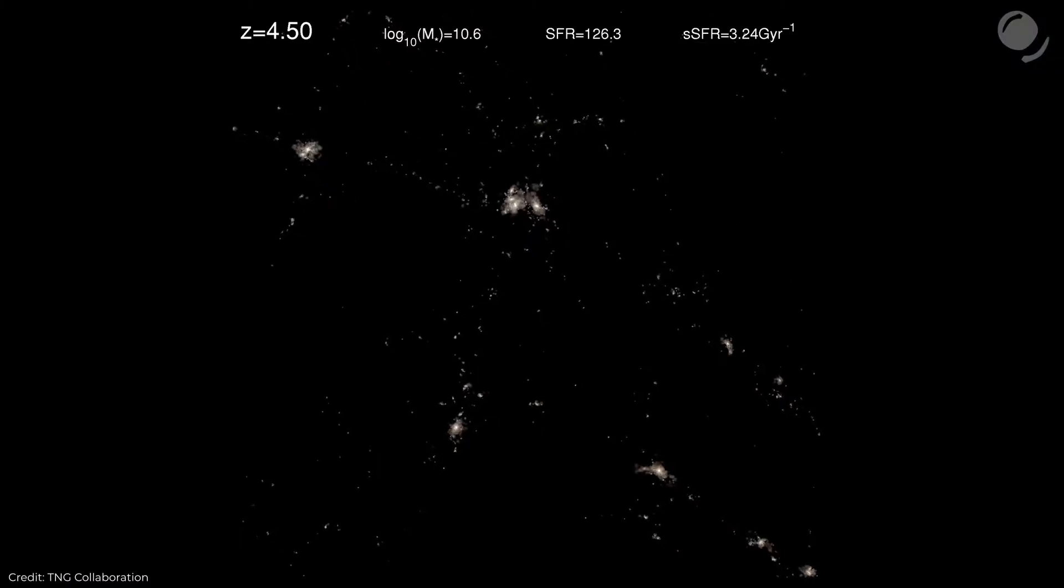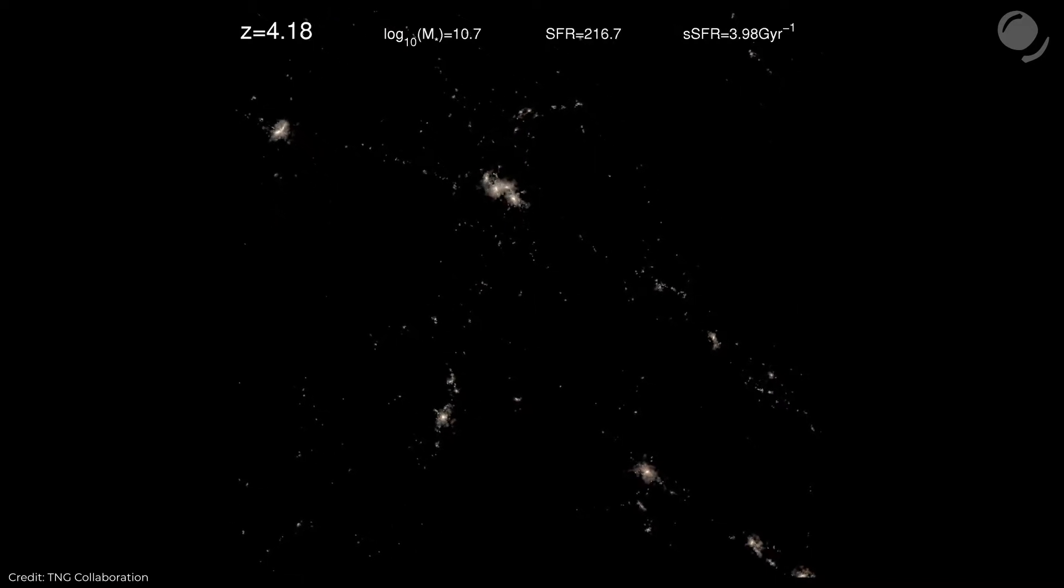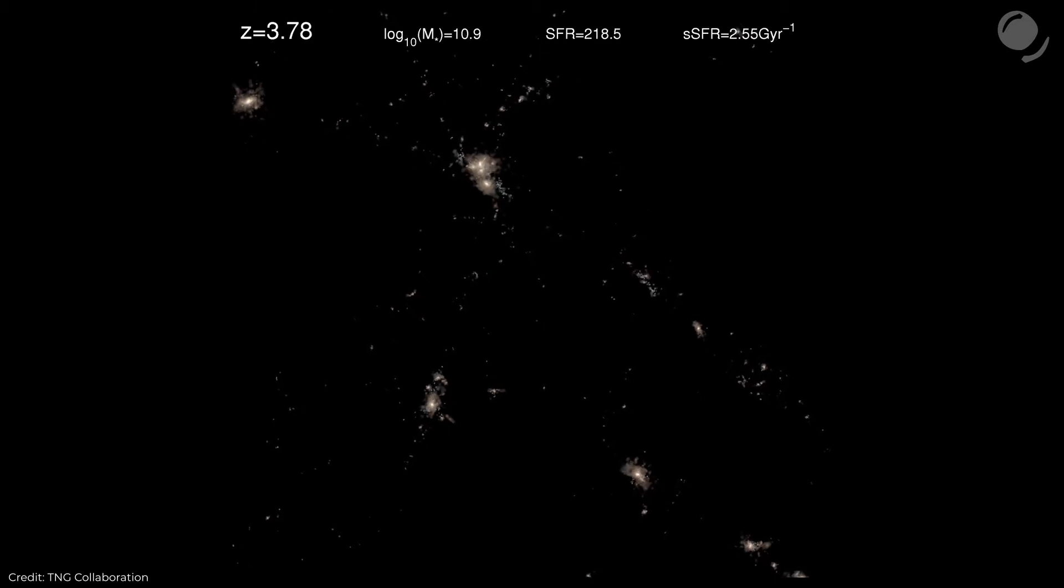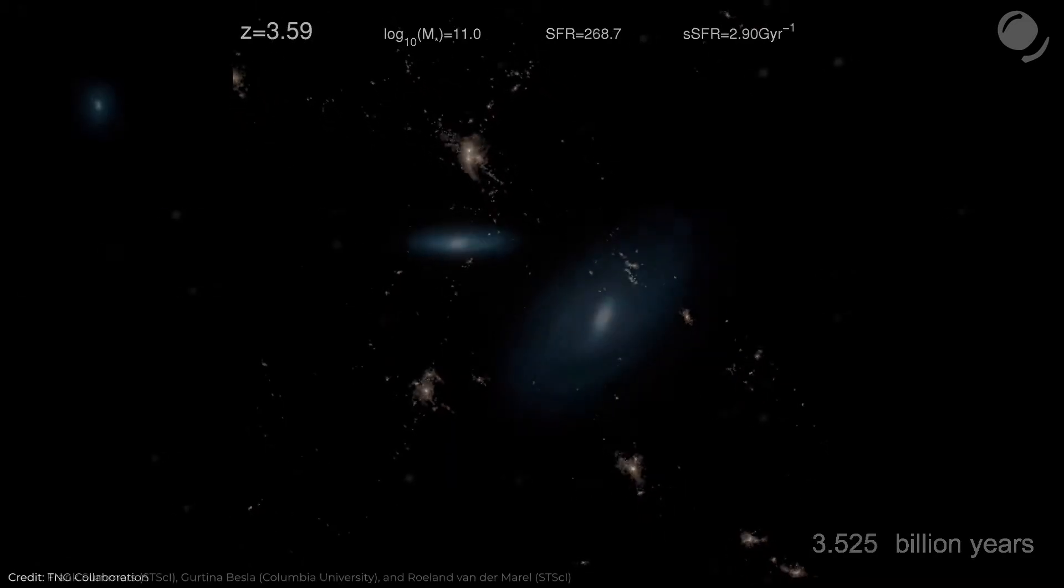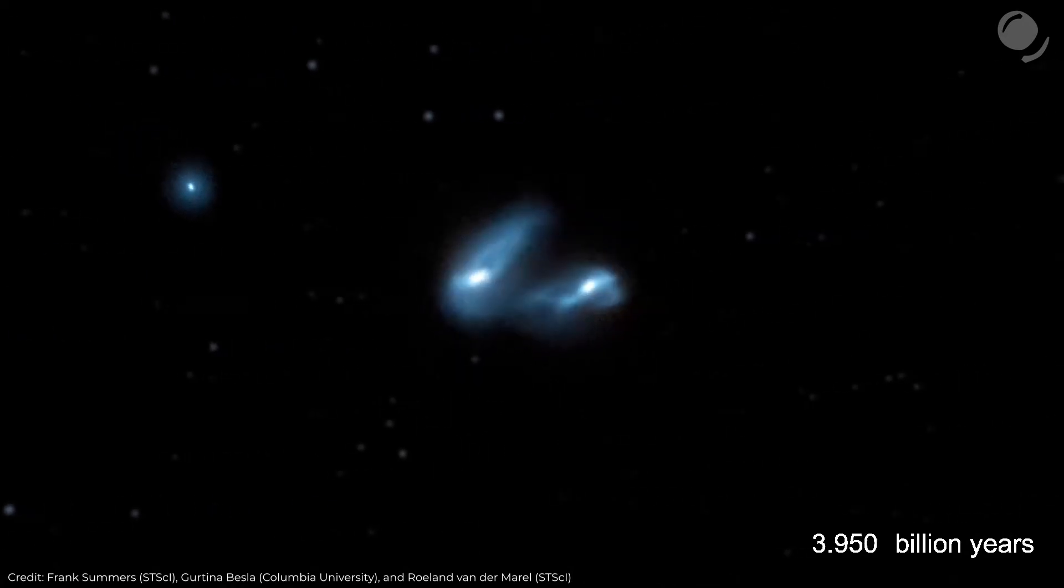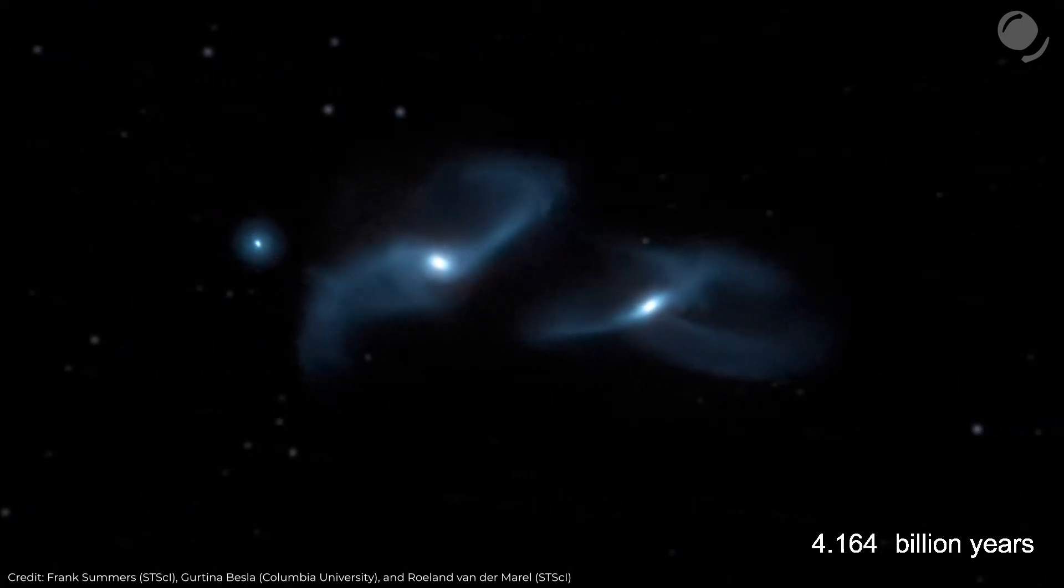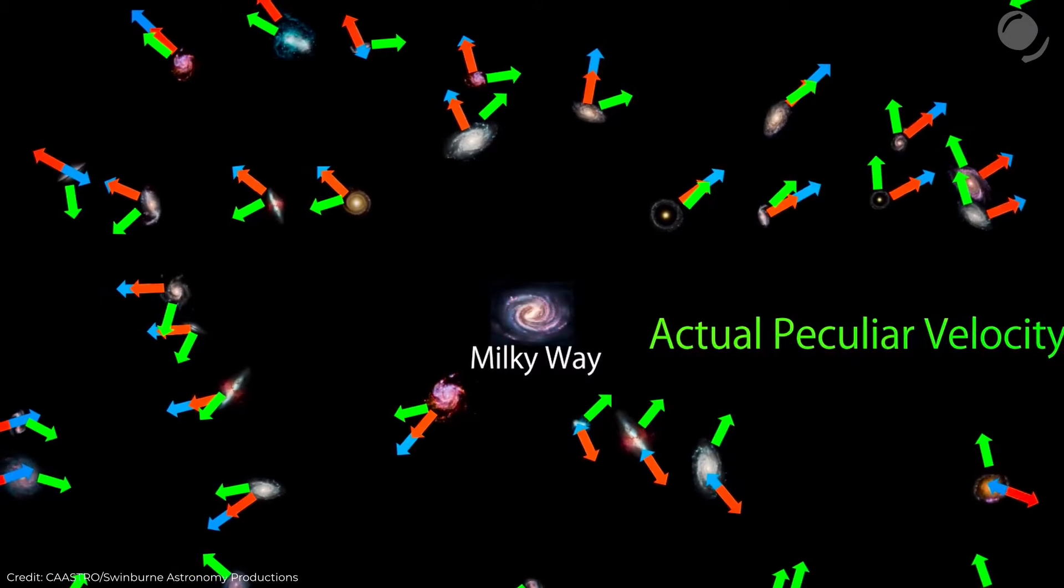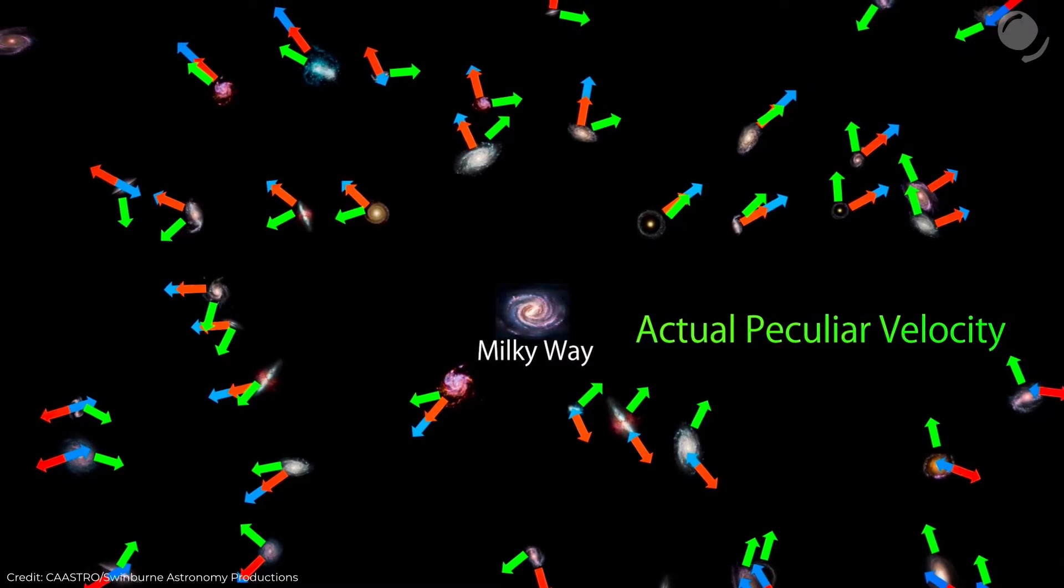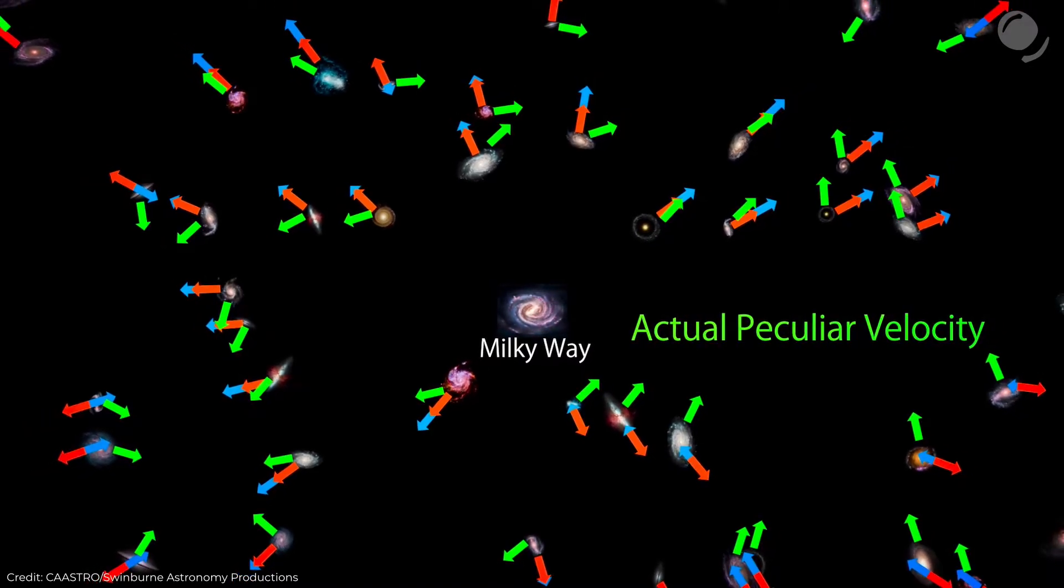But of course, galaxies in clusters, and even clusters themselves, don't just idly sit by in their local coordinates. They affect each other gravitationally, and that defines their peculiar motion. The most obvious example of that is how our galaxy and Andromeda galaxy are currently moving towards each other. So peculiar velocity is deviation from the Hubble flow, and the actual motion is combination of the Hubble flow and the peculiar velocity.